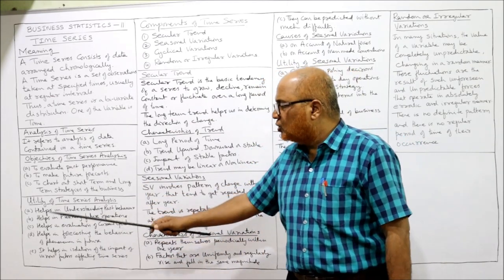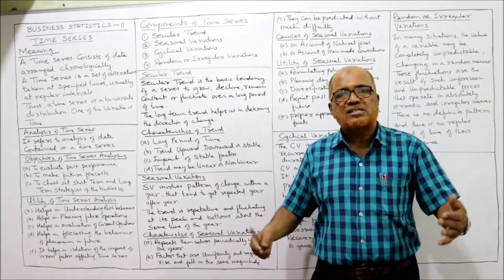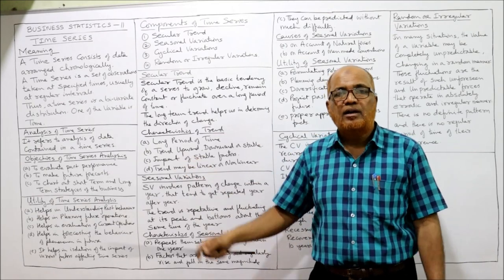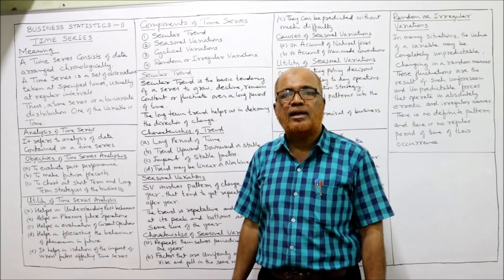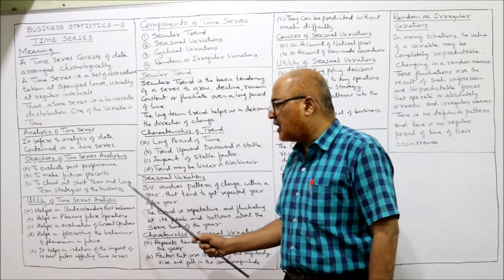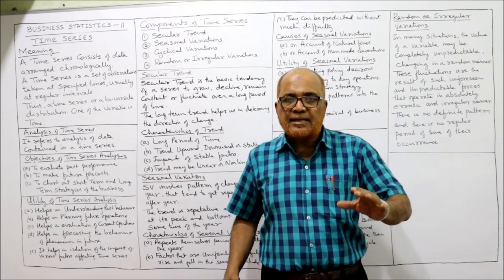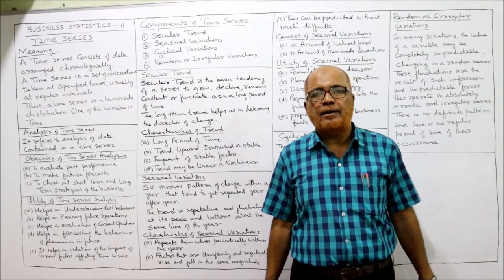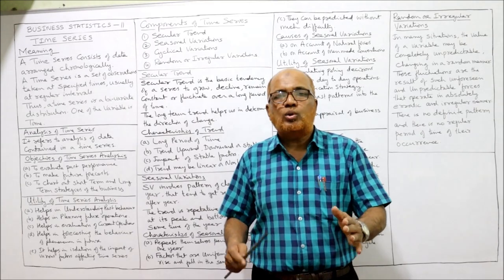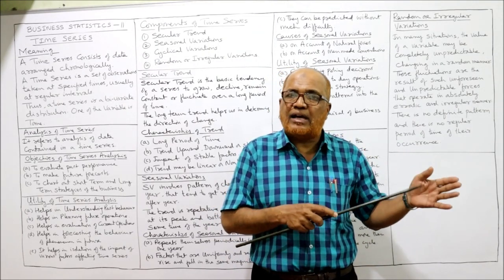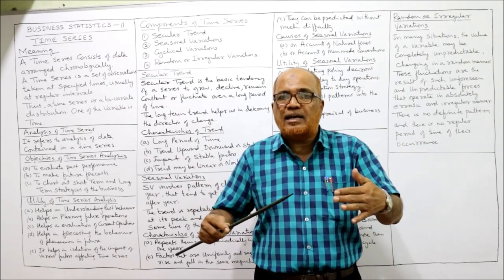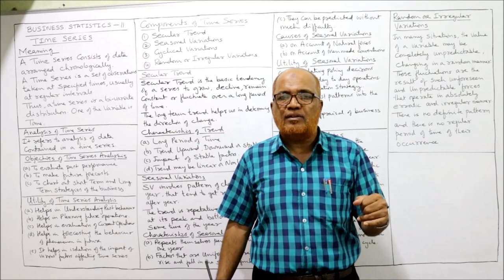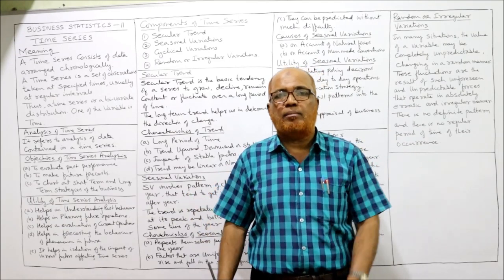Next comes the utility of time series — what is the benefit? How will it be helpful to the management? The first utility is it helps in understanding the past behavior of the variable. This time series will help the management in evaluating the past performance. For example, currently we are in 2021 — the company wants to evaluate how the company has performed in the last five to ten years: how much are the sales, profits, investments, all these things in the last ten years.